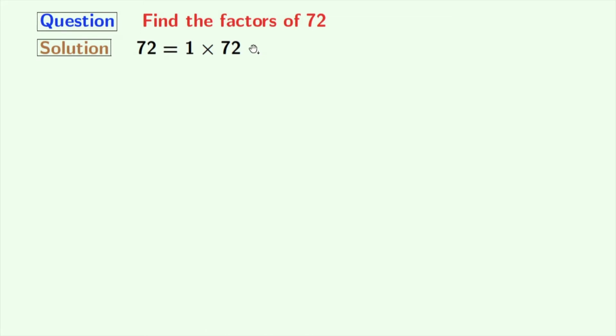The next number is 2, and as this is an even number, 2 divides it and we have 72 equal to 2 times 36. The next number is 3, and 3 divides 72, and we have 3 times 24 equal to 72.